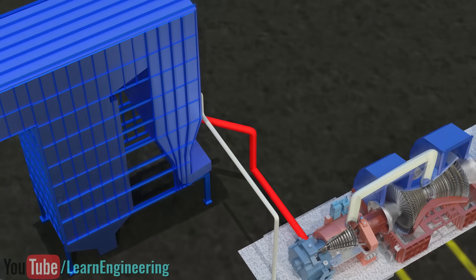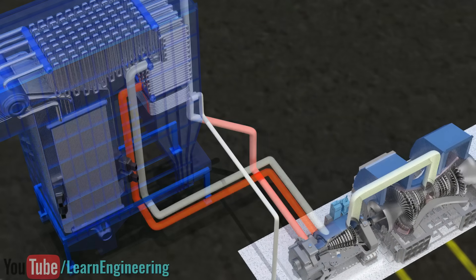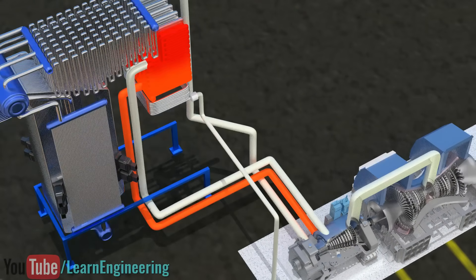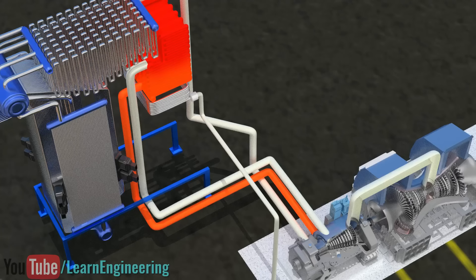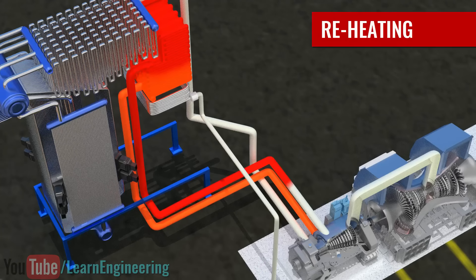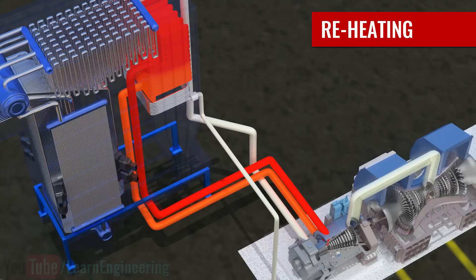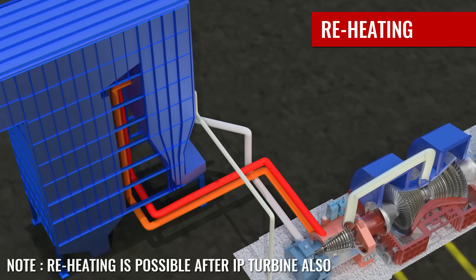So, after the first stage, the steam is bypassed to the boiler and more heat is added. This is known as reheating. This will increase the steam temperature again, leading to higher power plant efficiency and output.